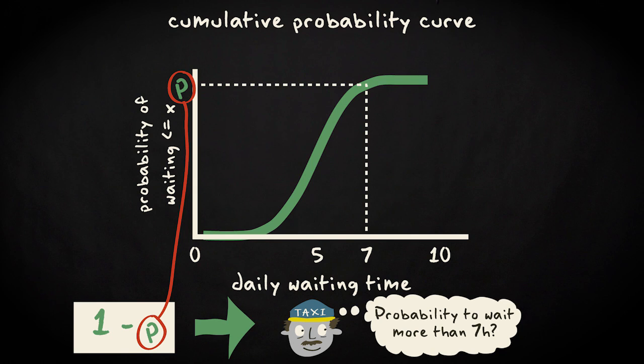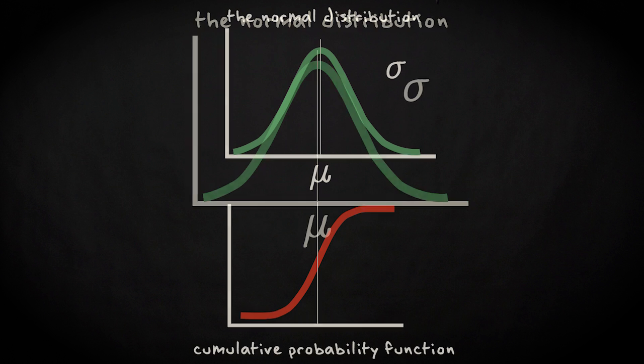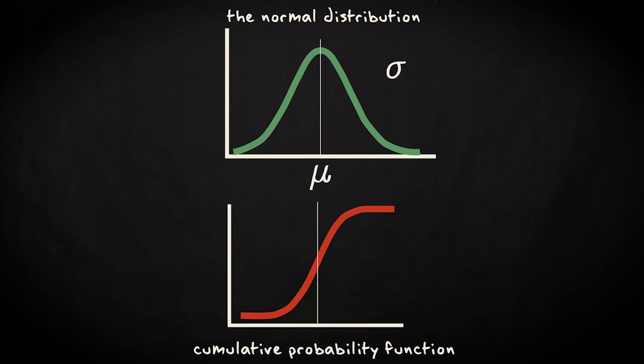Let's now apply this to a distribution for which we actually know the equation, the normal distribution. Its PDF has this shape, with the center placed at mu and the width defined by sigma. Its corresponding cumulative probability function looks as follows.